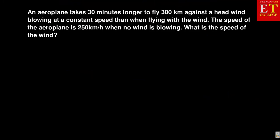Let us move on to the next question involving a word problem. An aeroplane takes 30 minutes longer to fly 300 kilometers against a headwind blowing at a constant speed than when flying with the wind. There are two directions involved: flying against the wind takes 30 minutes longer, and flying with the wind takes 30 minutes less. The speed of the aeroplane is 250 kilometers per hour when no wind is blowing. What is the speed of the wind?